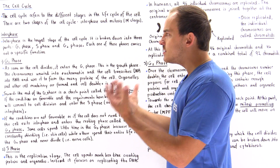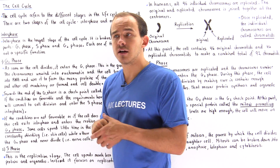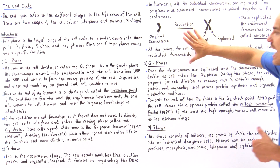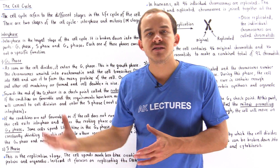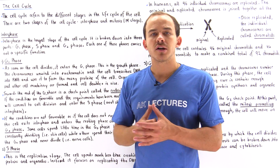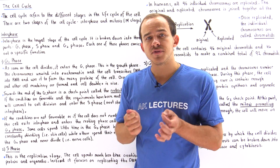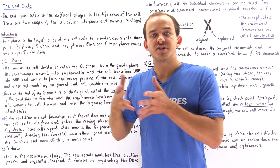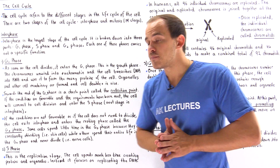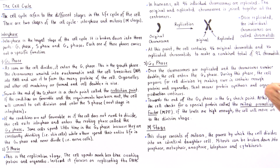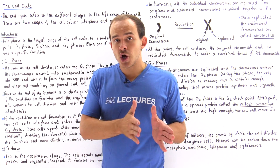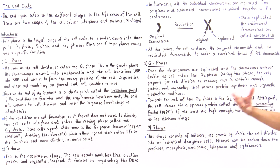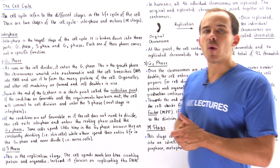So basically, the process of interphase is the first stage of the life cycle of an animal cell. Interphase consists of the G1 phase, the S phase, and the G2 phase. In the G1 phase, the cell grows in size because the majority of proteins and organelles are synthesized. The S phase is the replication phase, when the cell actually replicates the DNA. Finally, in the G2 phase, the cell makes sure it is prepared for cell division by continuing to synthesize proteins and organelles.